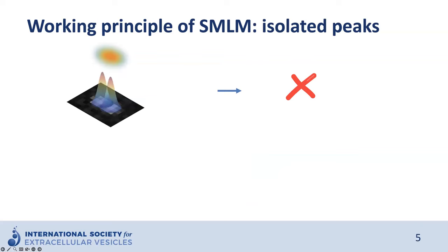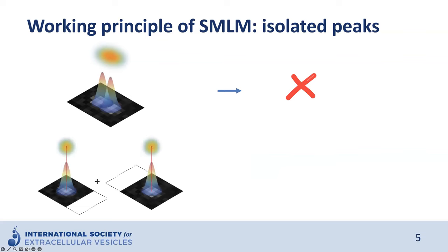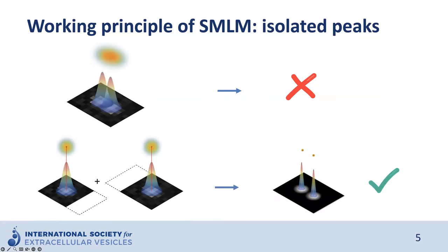The critical element of SMLM is the ability to temporarily regulate the activation of fluorophores. If peaks overlap, we cannot properly fit Gaussians and find the most probable position. To ensure that we can apply Gaussian fitting, we need to image isolated fluorophores — meaning one or fewer fluorophores in the diffraction-limited spot in each frame. We accomplish this by temporarily regulating the stochastic activation of single fluorophores. Only a subset of non-overlapping fluorophores is imaged in each frame; their positions are fit and frames are combined to reconstruct an image containing all detected localizations.